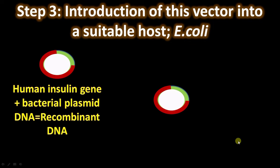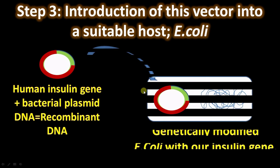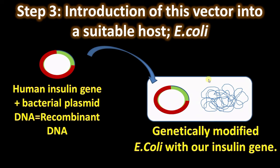Step three: introduction of this vector into a suitable host — the most common host is E. coli for insulin production, though now yeast and mammalian cell lines are also used. The recombinant DNA molecule with either A gene or B gene of insulin is introduced into E. coli. Different gene transformation methods include electroporation, micro-injection, and calcium chloride mediated transformation. Now we have a genetically modified E. coli with our insulin gene. This process is called transformation.